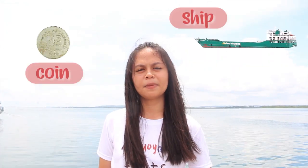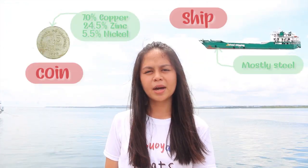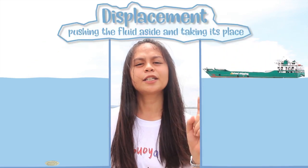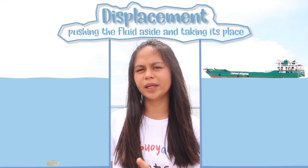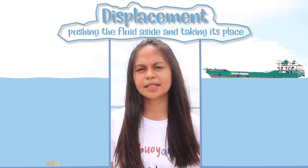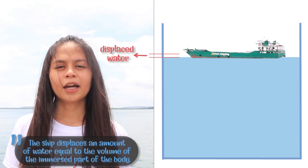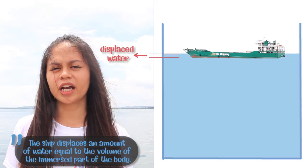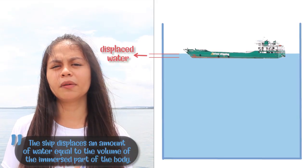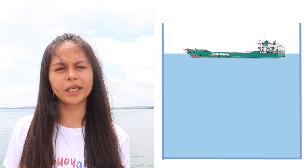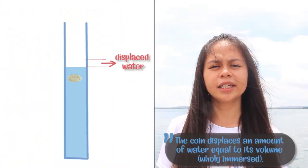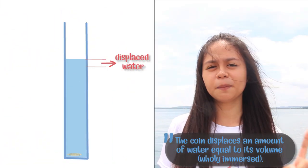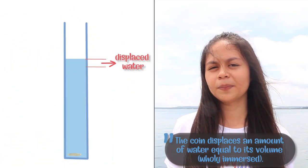Consider a ship and a coin that are both made up of the same material — metals. When these two objects are plunged into the water, displacement in fluid happens. The ship displaces an amount of water equal to the volume of the immersed part of the body, and a coin displaces an amount of water equal to its volume.